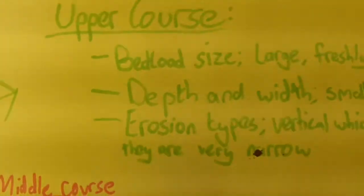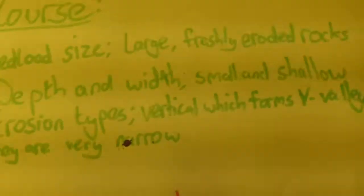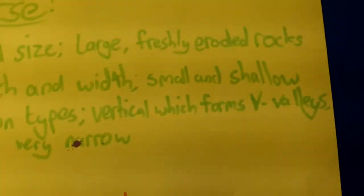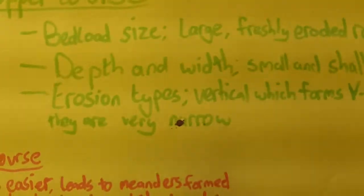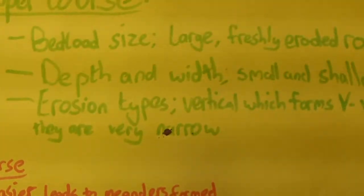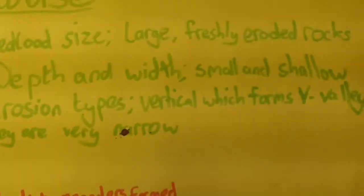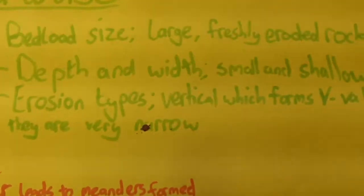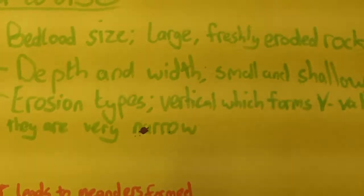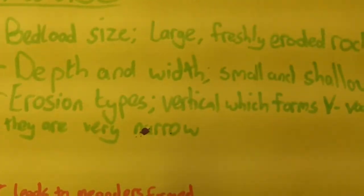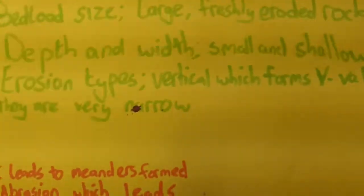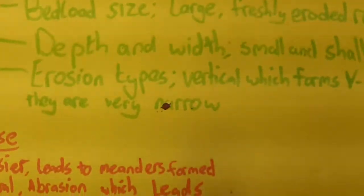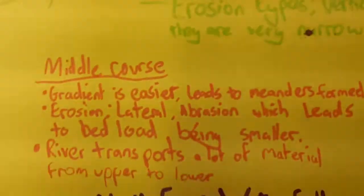The upper course bed load size is large from the freshly eroded rocks. Its depth and width are shallow and small, due to the slow river. The erosion types there are vertical, which forms the V-shaped valleys, which are very narrow.